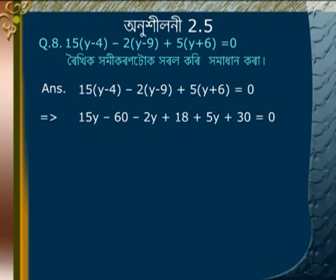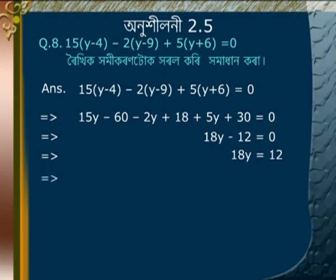Simplifying: 18y minus 12 is equal to 0. Dividing gives y is equal to 2/3. That is the answer.